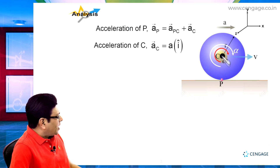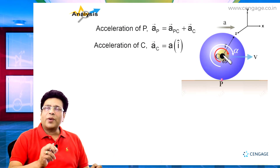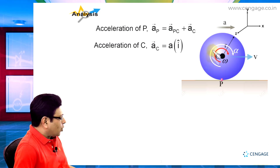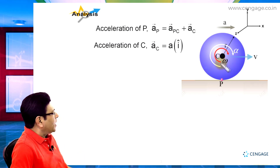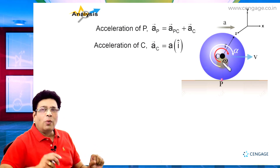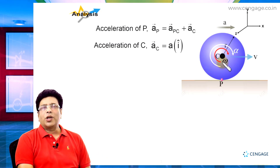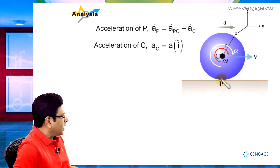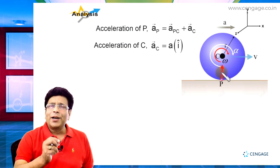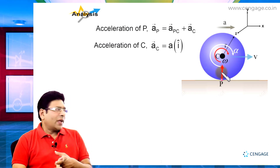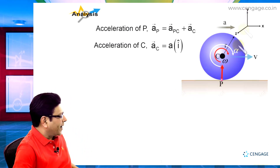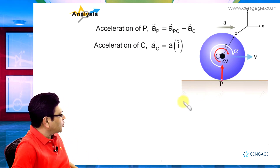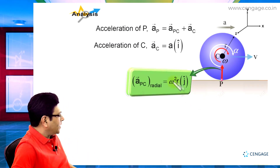Now consider from the frame of reference of the centre of the disk. Observing from the centre, we see the motion of point P as circular motion — more precisely, non-uniform circular motion. For non-uniform circular motion, there is both radial acceleration and tangential acceleration. The radial acceleration is directed toward the centre, with magnitude omega squared times r, and its direction is parallel to the positive y direction. In unit vector notation, the radial component of acceleration of P with respect to C is omega² r ĵ.